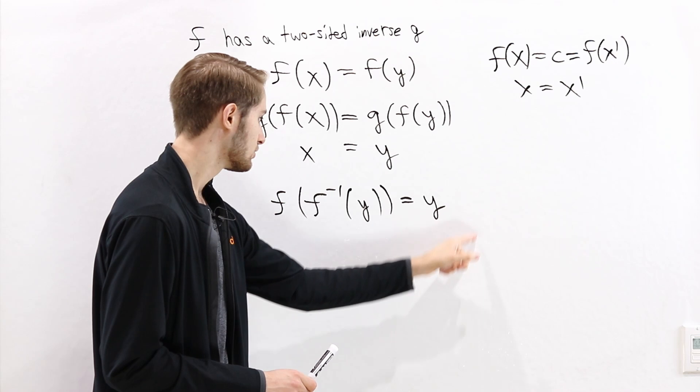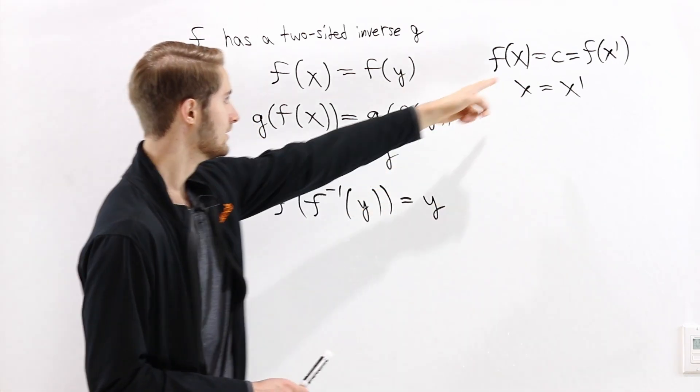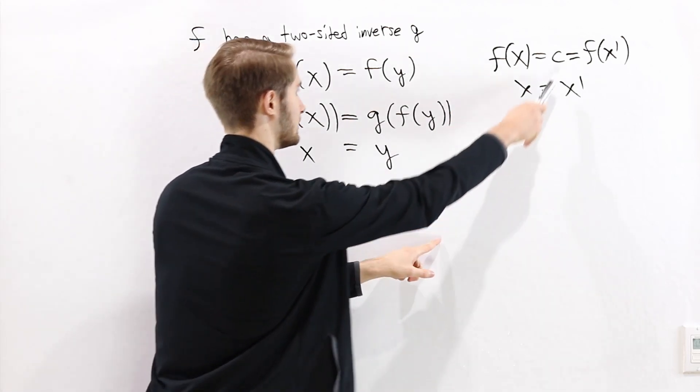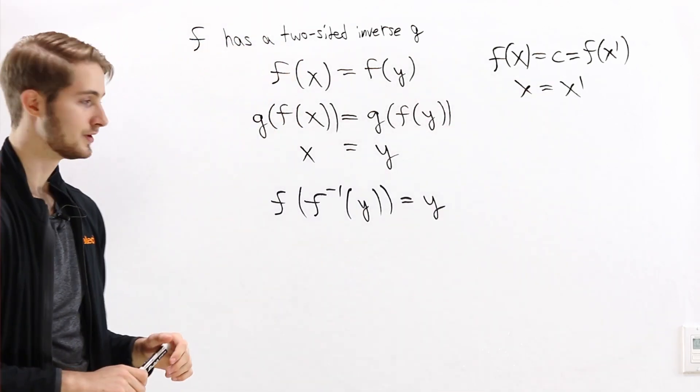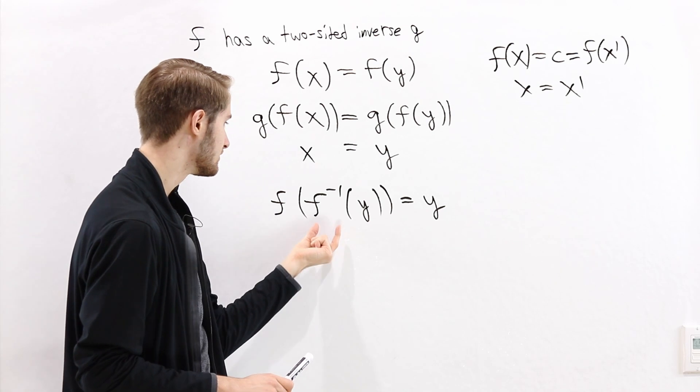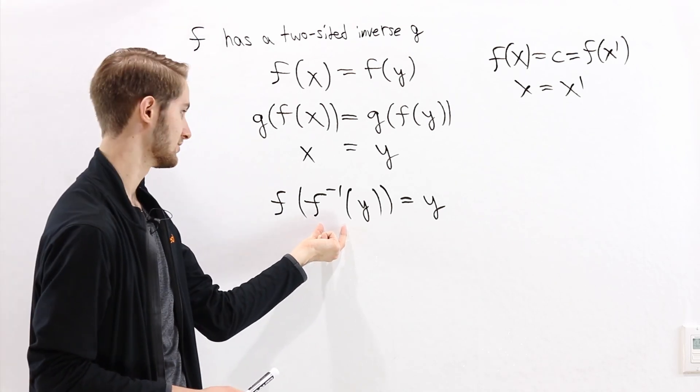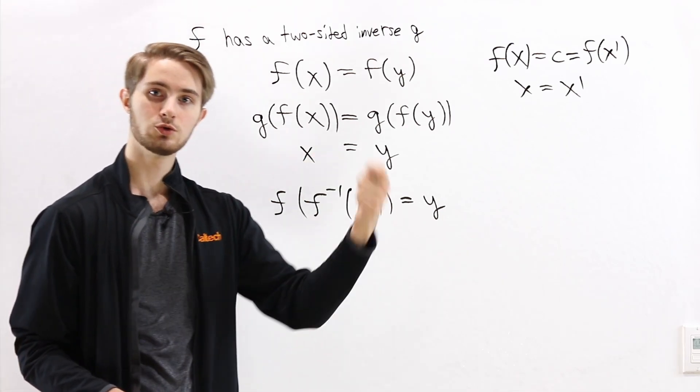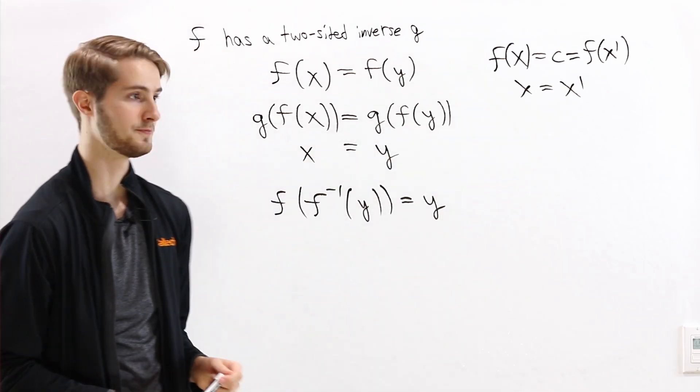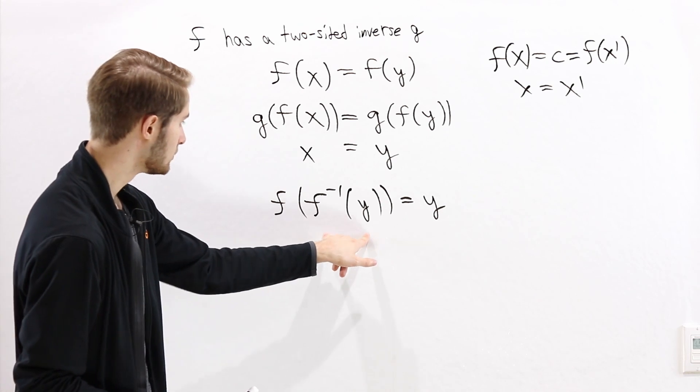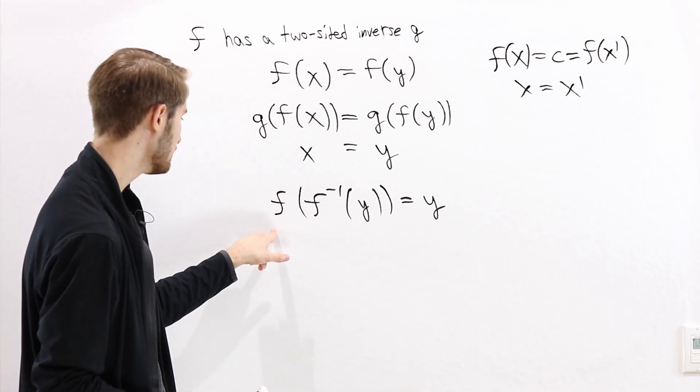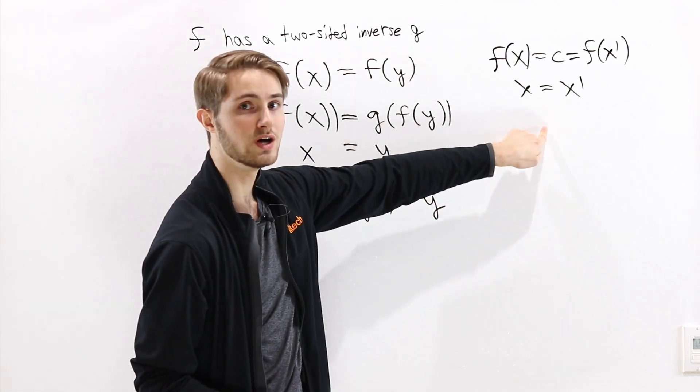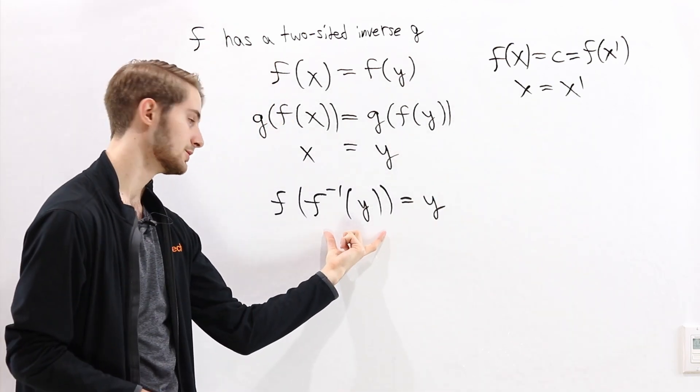Now if we look at this equation, it has the same form as the equation we looked at up here. F of something equals some fixed output. So if our goal is to construct a right inverse, we can do that by picking values of f inverse of y for each individual point y in the codomain. But for each individual point, this equation f of f inverse of y equals y, has at most one solution for this value in here, f inverse of y.